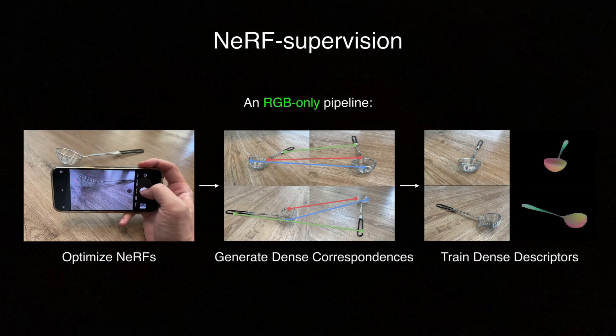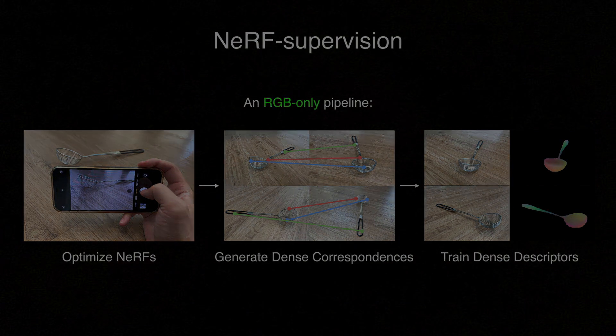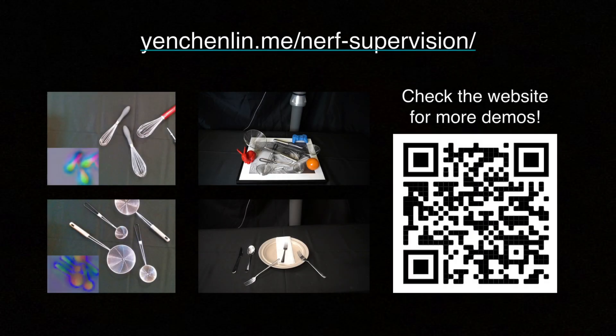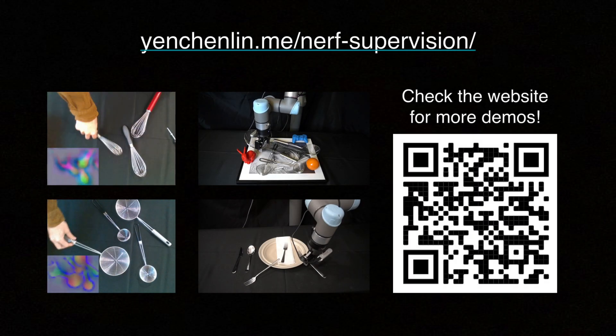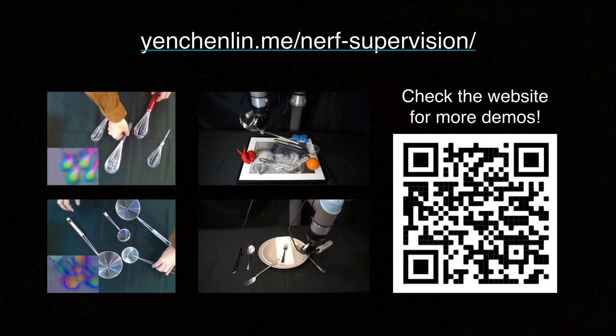In summary, NeRF Supervision is an RGB-only pipeline that uses NeRF to supervise dense correspondence models. We show that this pipeline enables robots to manipulate challenging objects that are otherwise not possible. Thank you for your attention, and please visit our project website for more information.